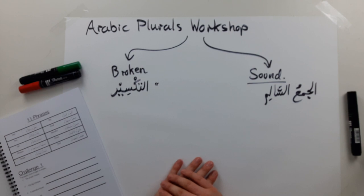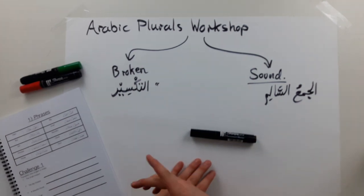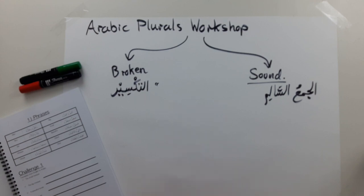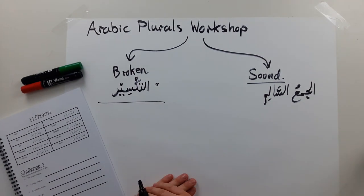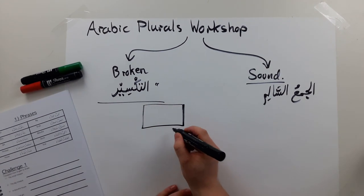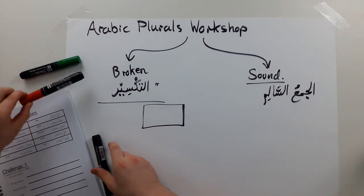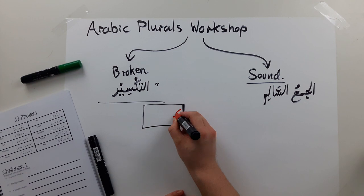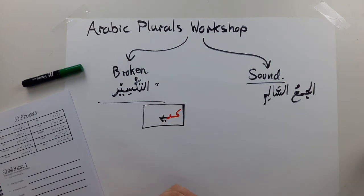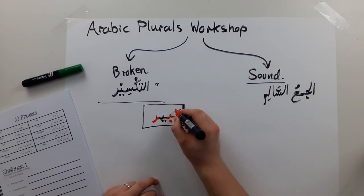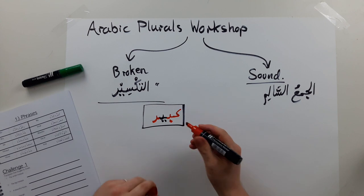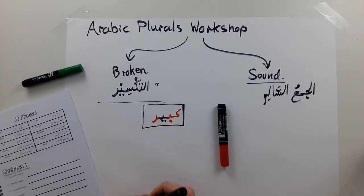A sound plural in English is pretty much just sticking an 's' on the end: table/tables, pen/pens, book/books, teacher/teachers. With a broken plural, we take whatever the word is — a noun or adjective — and we break up its root letters. Let's take the word 'kabirun' and put its root letters in red: kaf, ba, and ra. We then put them into a pattern.